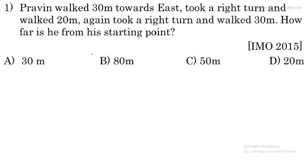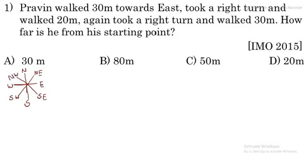To solve this question, first we will see the directions. This is north, this is south, this is east and this is west. The directions in between — south-east, south-west, and north-west — have already been discussed in the angle-based part. So Praveen walked 30 meters towards east, meaning Praveen ne east ki side mein 30 meter walk kiya.